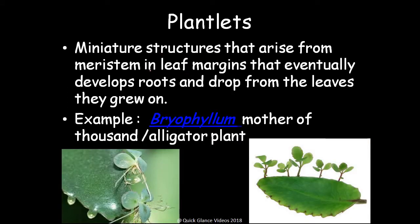Plantlets: miniature structures that arise from the meristem of the leaf margin, eventually developing roots and dropping off from the leaves they grow on. The most common example is Bryophyllum, also called Mother of Thousands or Alligator plant, where new plants emerge at the margin of the leaf. Roots develop there and the plantlet eventually falls down and develops into a new plant. These are the plantlet mode of vegetative reproduction.